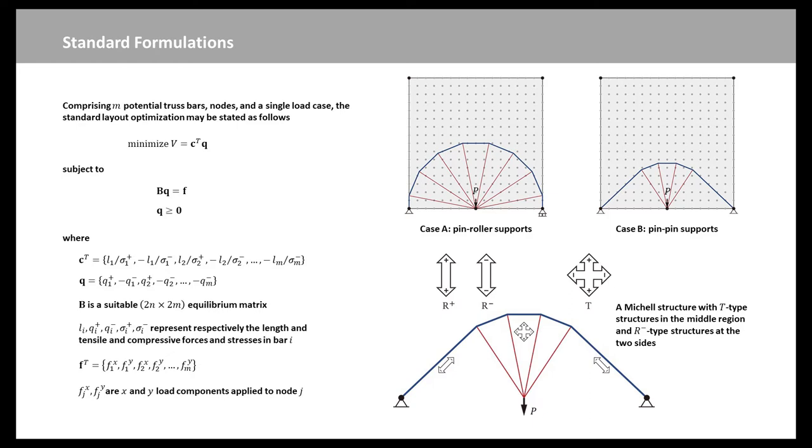T-type region contains adjoined strands in two orthogonal directions. Thus, optimized structures in this region usually have tension and compression members intersecting with each other at 90 degrees. R-type region contains adjoined strands of only one side in one direction. Thus, optimized structures in this region usually are single or parallel bars all in tension R-plus or all in compression R-minus.